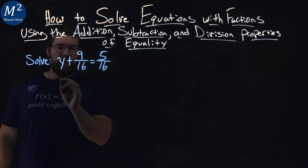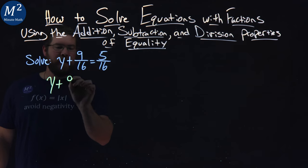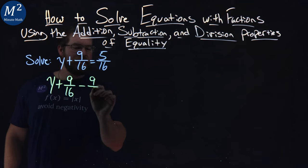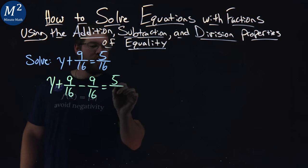So, if I'm going to rewrite this, I have y plus 9 16ths, I can subtract that same exact amount, 9 16ths, to both sides of the equation.